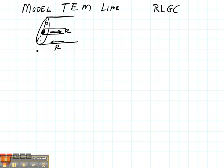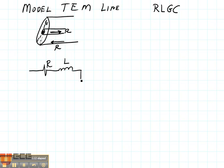And we end up with a model that looks something like this. We have some resistance R, we have some inductance L, we have some conductance G, and we have some capacitance C.